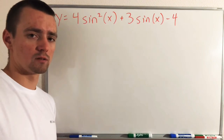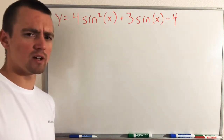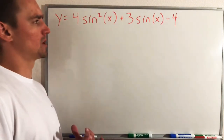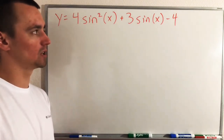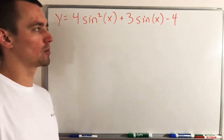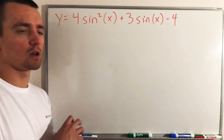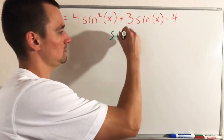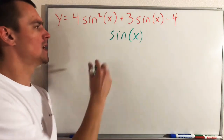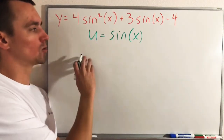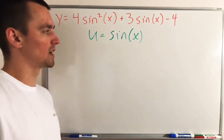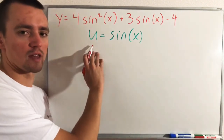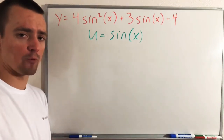As discussed in that book when covering the chain rule, the easiest way to apply it and find the derivative of a function like this is to first determine what your inside function would be — essentially, if you're thinking about writing this as a composite function, what's the function being plugged into another function. As I said at the end of that last video, that inside function would be sine of x, and we set u equal to sine of x.